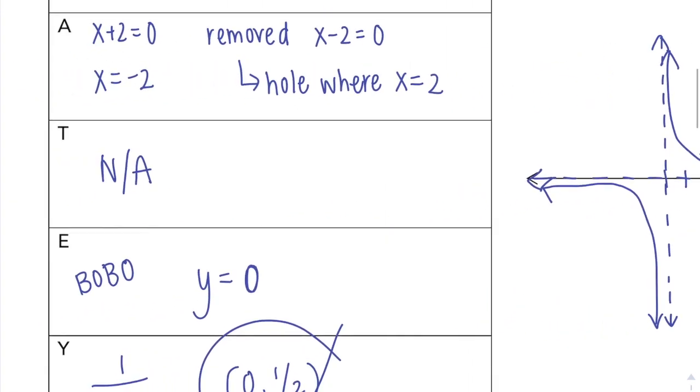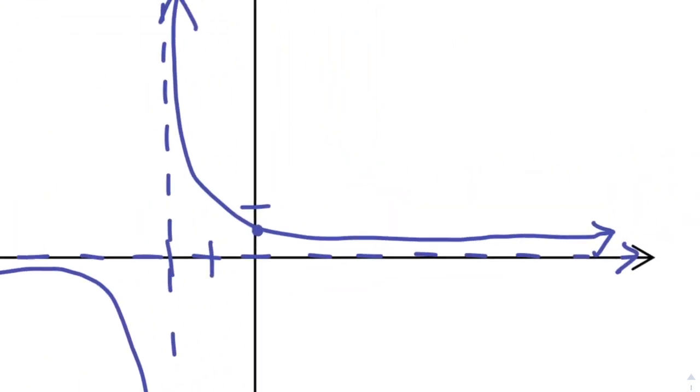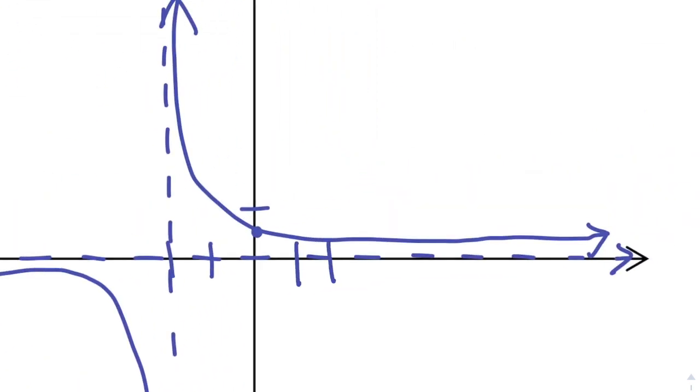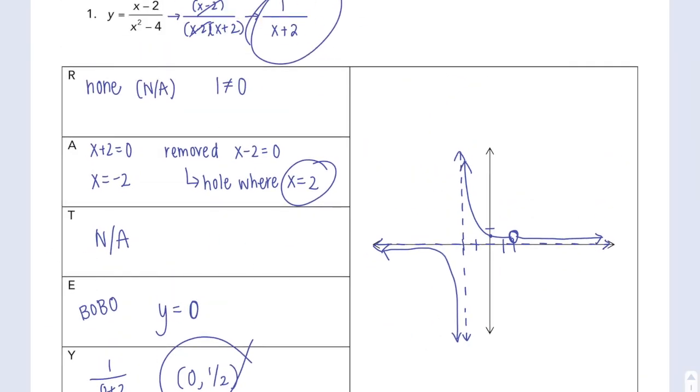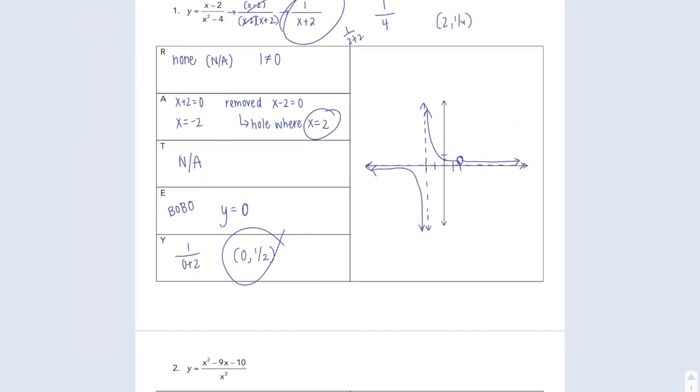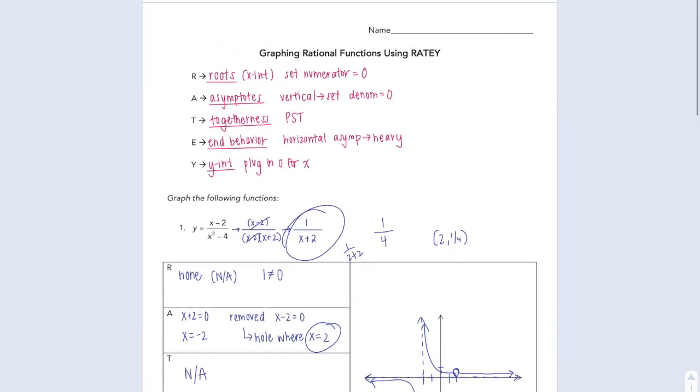And there's one more thing I have to do, and that's I need a hole where x is 2. So over here where x is 2, it should technically have a hole there. So your graph would actually look like this. And that's how it works. Specifically, my hole would be at 1 fourth, because 1 over 2 plus 2. So my hole is at 2, 1 fourth. But you can just sketch that out for this. And that's RATEY.